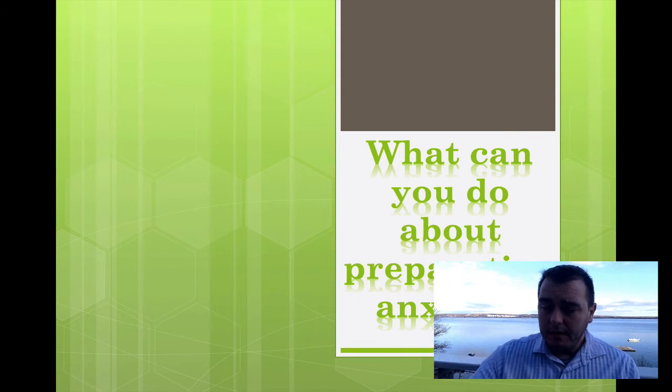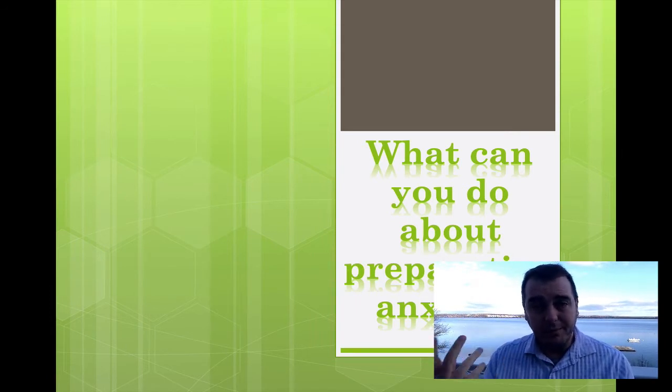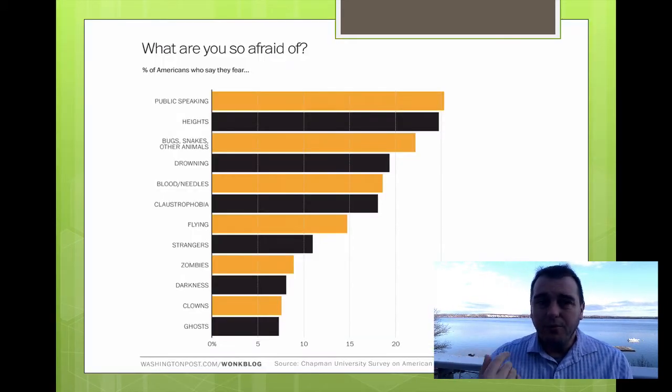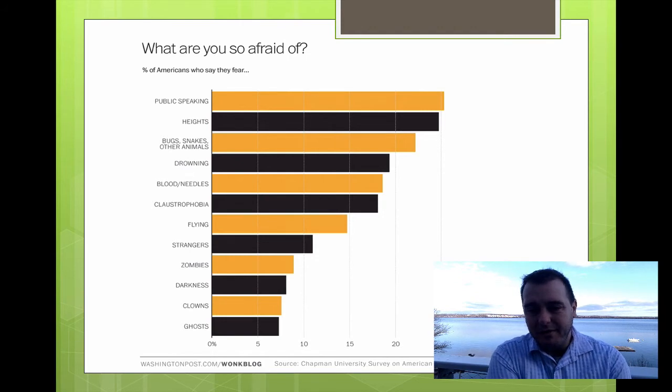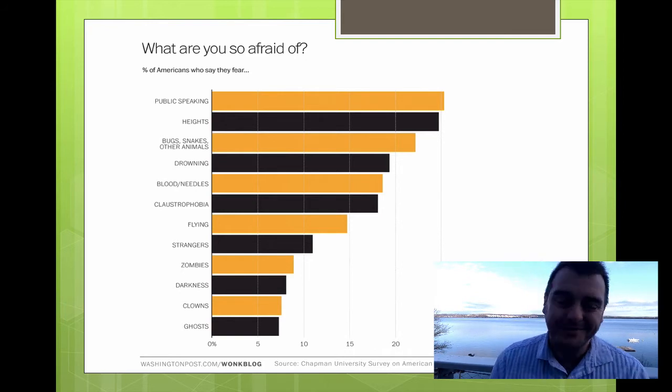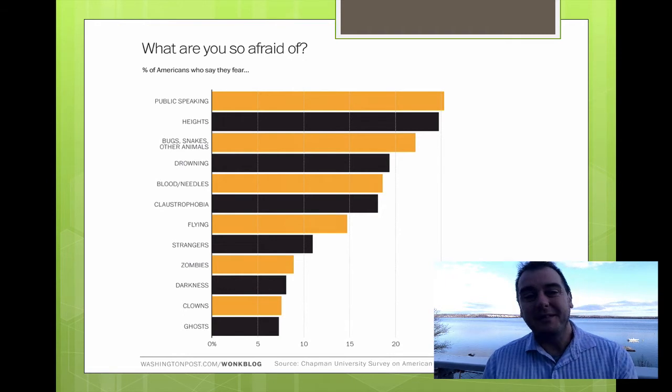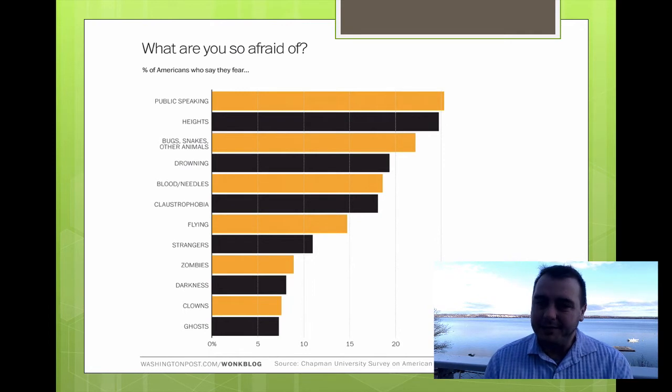But let's go back to the notion of what is public speaking anxiety? Where does it come from? Here's a recent poll from the Chapman University survey on American Fears that the Washington Post published. And you see up there at the top, you squint in really carefully. Sorry, there's tiny text. Public speaking is up at the top, followed by heights, bugs, snakes, and other animals, drowning, blood and needles, claustrophobia, flying, spiders, zombies, darkness, clowns, and ghosts.